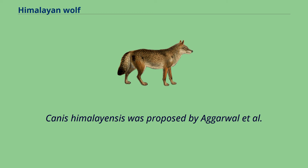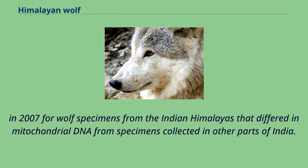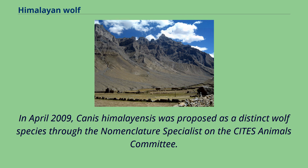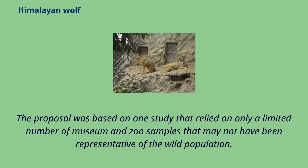Canis himalayensis was proposed by Agarwal et al. in 2007 for wolf specimens from the Indian Himalayas that differed in mitochondrial DNA from specimens collected in other parts of India. In April 2009, Canis himalayensis was proposed as a distinct wolf species through the nomenclature specialist on the CITES animals committee. The proposal was based on one study that relied on only a limited number of museum and zoo samples that may not have been representative of the wild population.